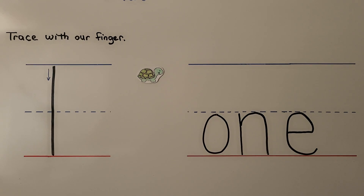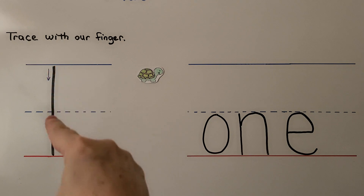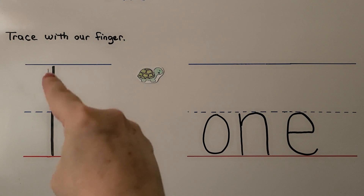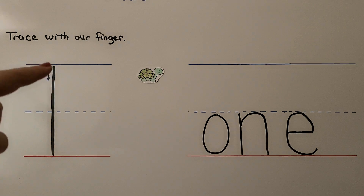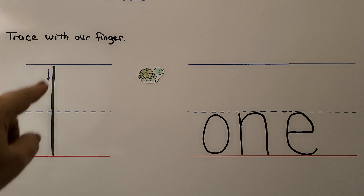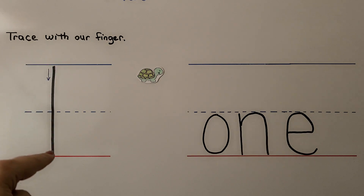We're going to trace the number one with our finger. For right-handed students, we start at the top and come down to the line. For left-handed students, we do the same thing — start at the top and come down to the line.